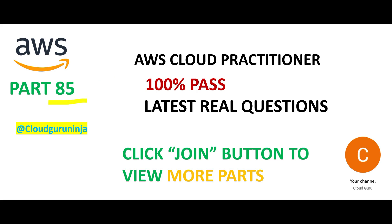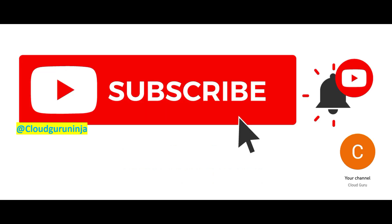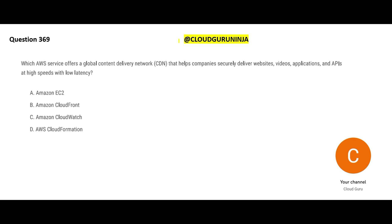Welcome to part 85. Parts 83 and 84 are in the members area, accessible to Cloud Kernel and Cloud Ninja members — click the link in the description to become a member. If you have not yet subscribed, do so. This channel helps you clear certifications by going through questions, options, and concepts linked with each option. Think of it like playing a real match, not net practice — that builds your confidence for certification.